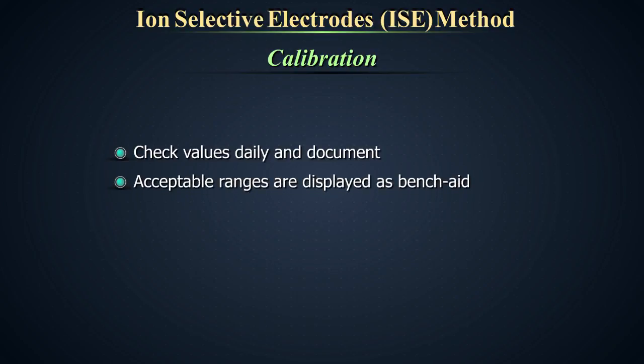Acceptable ranges should be displayed as a bench aid near the equipment to give ready reference to its performance. If the acceptance criteria are breached, perform maintenance as per manufacturer's instructions.